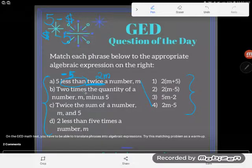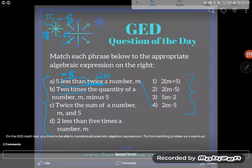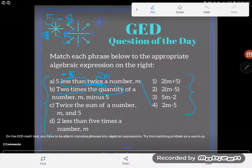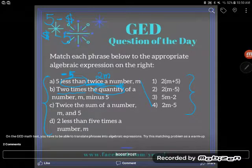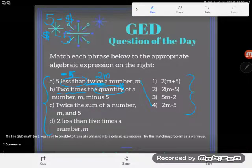B. B says two times the quantity. I want you to pay attention to quantity because quantity means all. So two times the quantity of a number M minus five. So now a lot of students tell me no, that should be 4K. Look, two times the quantity of a number M minus five, that should be four, but careful.